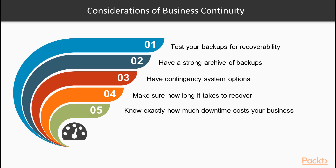Important considerations for business continuity include: regularly test your backups for recoverability; have a strong archive of backups; perform daily backups along with weekly and monthly snapshots; have contingency system options — even if you plan on hosting locally, consider having a cloud server configured where you can run your Odoo installation in a pinch. Make sure you know how long it takes to fully recover your Odoo installation and what data would need to be re-entered into the system. Know exactly how much downtime costs your business and plan accordingly.